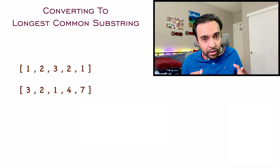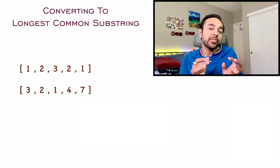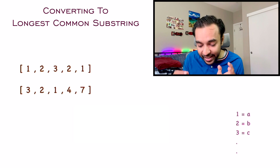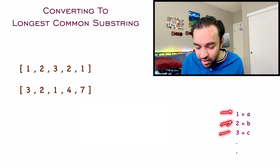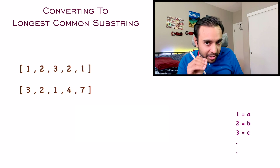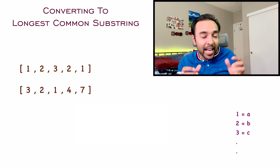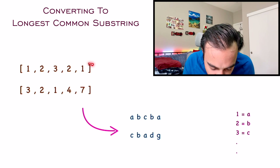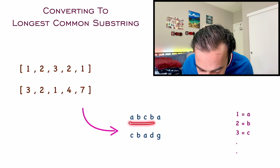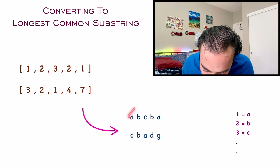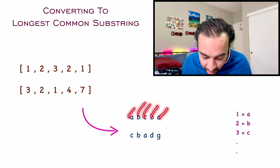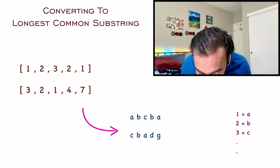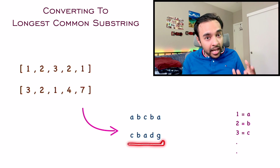Before diving into the solution, just pause for a moment and think: what if you assign a certain character to each and every number? For example, let's say 1 equals a, 2 equals b, 3 equals c, and so on. Now try to substitute each of these integers with these characters and see what your problem translates into. As soon as I replace all of them, my first integer array translates to a, b, c, b, a — since 1 is a, 2 is b, 3 is c. Similarly, you can translate your second array, and it becomes something like c, b, a, d, g.